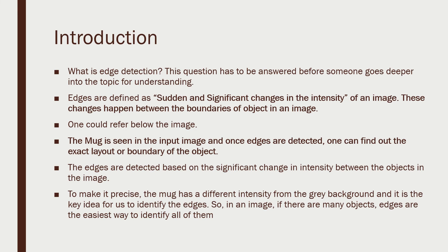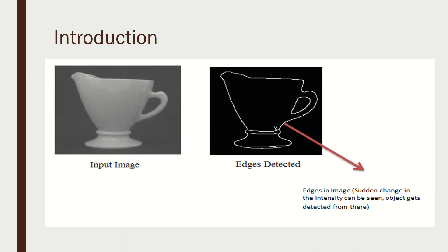I am going to show you a mug and the edges are going to be detected in that image. You can see the sudden intensity change and that is where the edges are detected. This is the input image — here we have a grey background and the intensity suddenly changes at this place. This is what we refer to as edges: the sudden change in intensity. Going along the entire edge, the entire object can be carved out, and this helps us identify objects through the variation of intensity in the image.